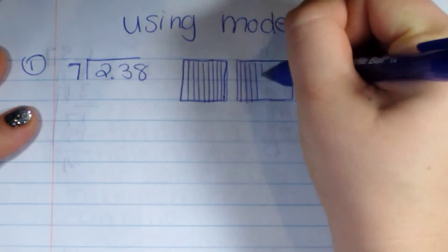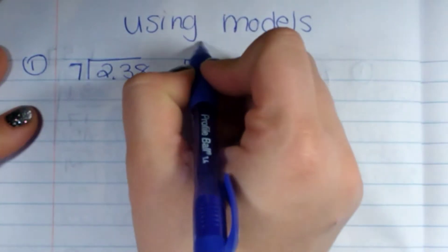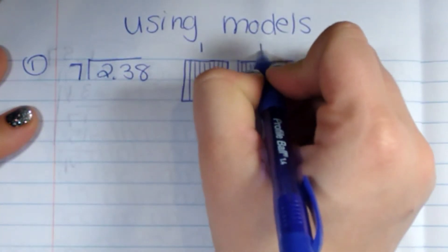Three, four. So there's ten, so this is one whole and one whole.